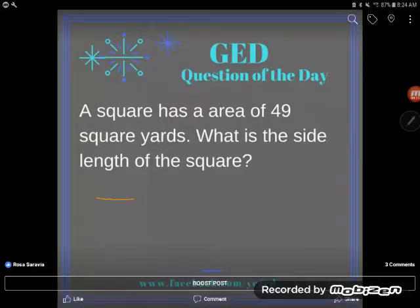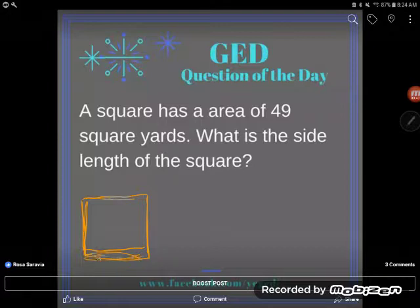We've got a square here. Now remember that a square is a quadrilateral, a four-sided shape, where all four sides are the same length.